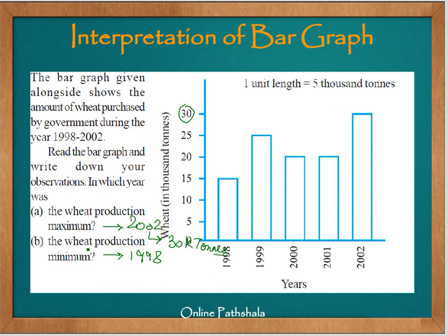What was the wheat production in the year 1998 when it was minimum? The bar is coinciding with 15 on the scale, where one unit length is 5000 tons. So the wheat production in 1998 was 15,000 tons.